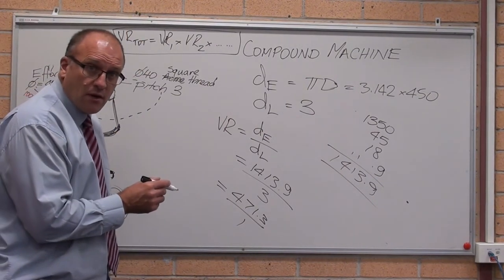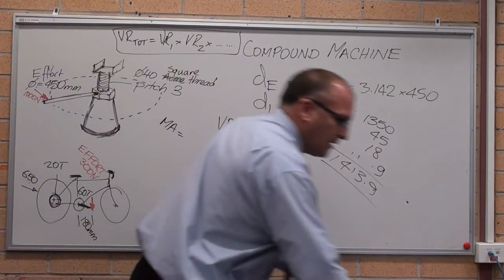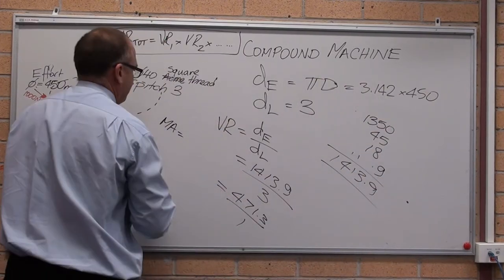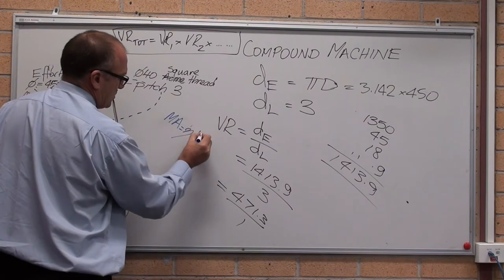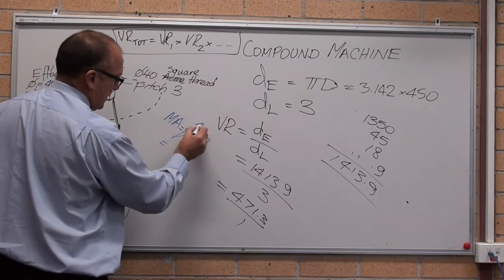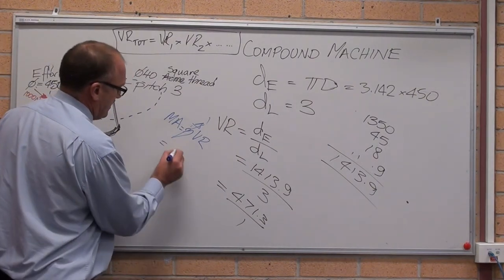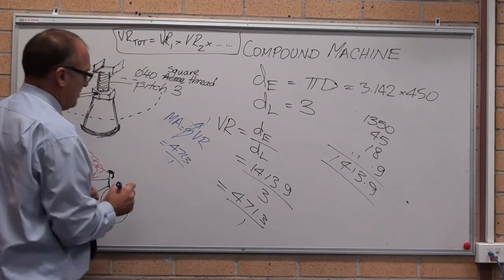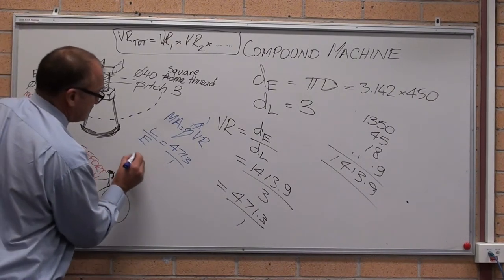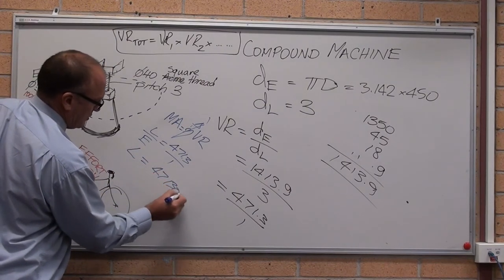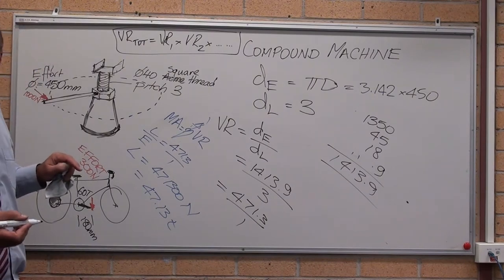That's a fairly massive velocity ratio. Assuming 100% efficiency, very unlikely. Mechanical advantage, I'll use a different color. Mechanical advantage equals velocity ratio times efficiency. Let's assume that's 1. Really poor assumption for a threaded jack where there's a lot of friction. Assume it's 1. If it's 471.3 to 1. Load on effort equals that. If the effort equals 1000 newtons, therefore the load is 471,300 newtons equals 47.13 tonnes. Fairly massive load you can lift with the thread.